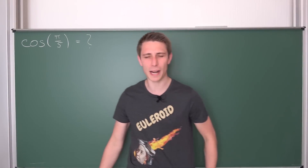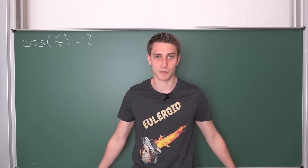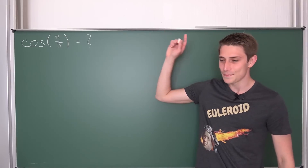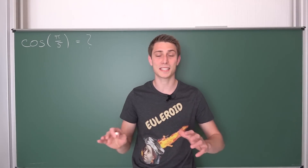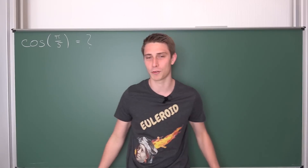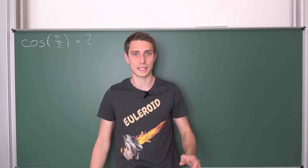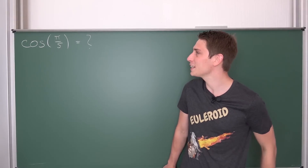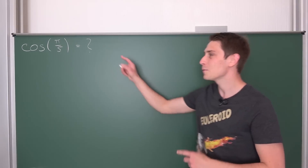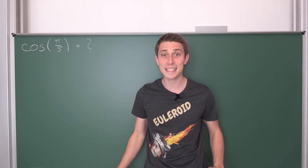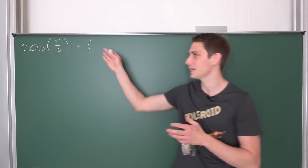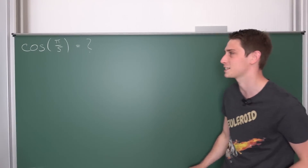Good morning fellow mathematicians, welcome back to our video. Today we are going to take a look at something absolutely fantastic — a great trigonometric question: what's the cosine of π/5? This is only a prerequisite video for something we are going to do on Friday. A subscriber sent me an email with an extreme trigonometric question, and this thing right here is only part of it. I can't wait to cover it on Friday. It's going to yield such a crazy nice value. I can't stop smiling.